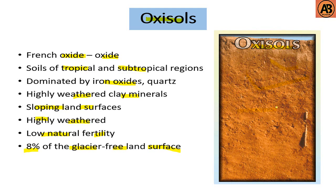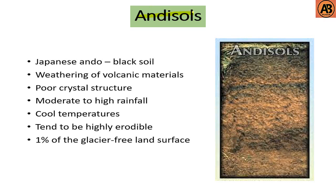Next are Andisols. Andisols come from the Japanese ando, meaning black soil. They are typically formed from the weathering of volcanic materials such as ash, resulting in minerals with poor crystal structure. They occur in areas of moderate to high rainfall and cool temperatures, and tend to be very fertile. They occupy about 1% of the glacier-free land surface.